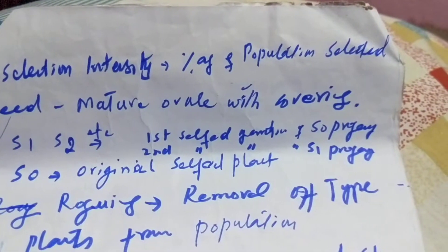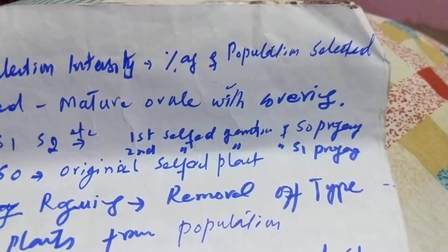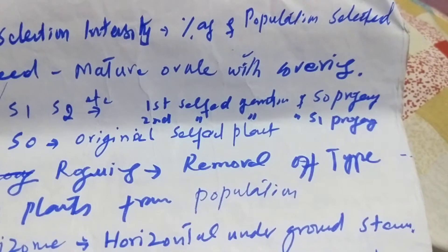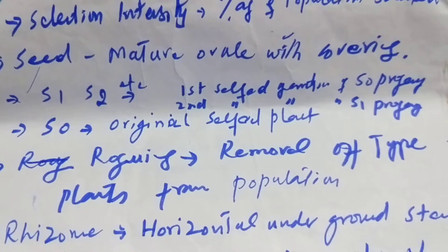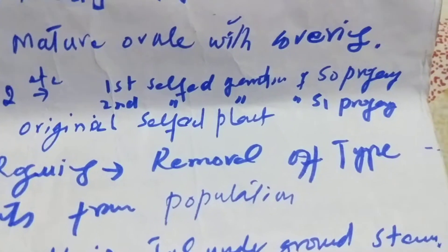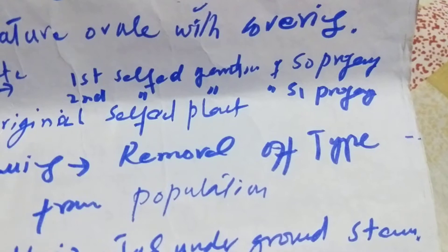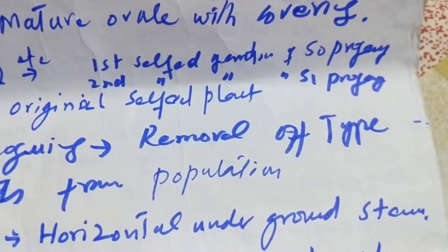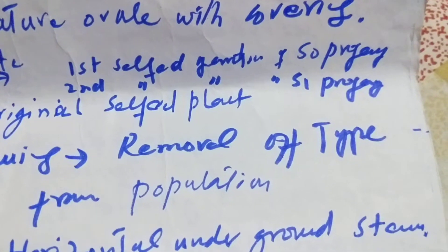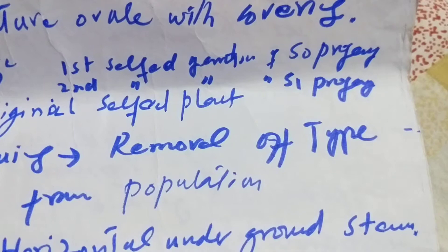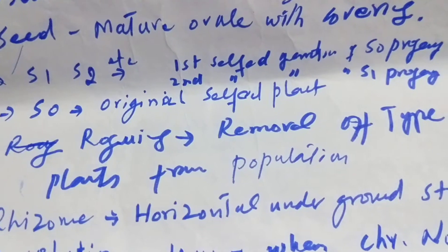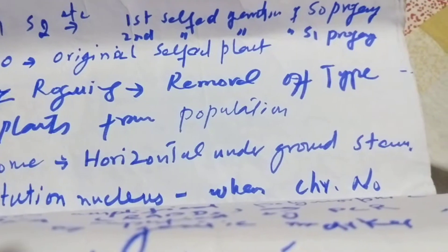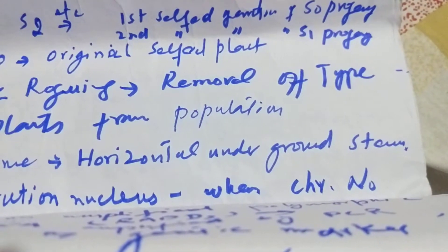Shattering is seed loss from a plant before harvesting. Selection intensity is the percentage of population selected. Seed is a mature ovule with a covering. S1 is the first selfed generation of S0 progeny, S2 is the second selfed generation of S1 progeny, and S0 is the original selfed plants. Roguing is the removal of off-type plants from a population.